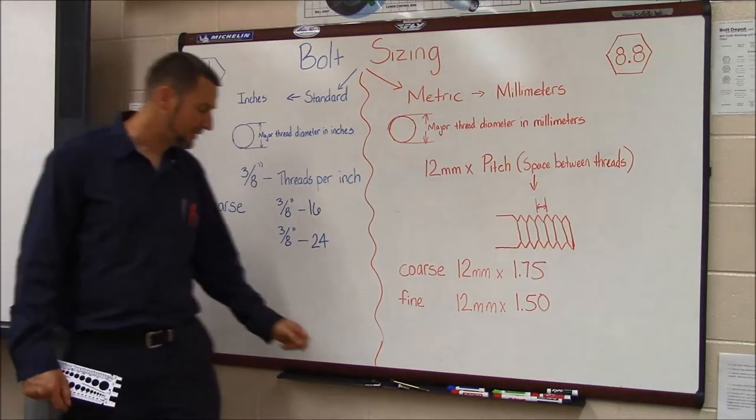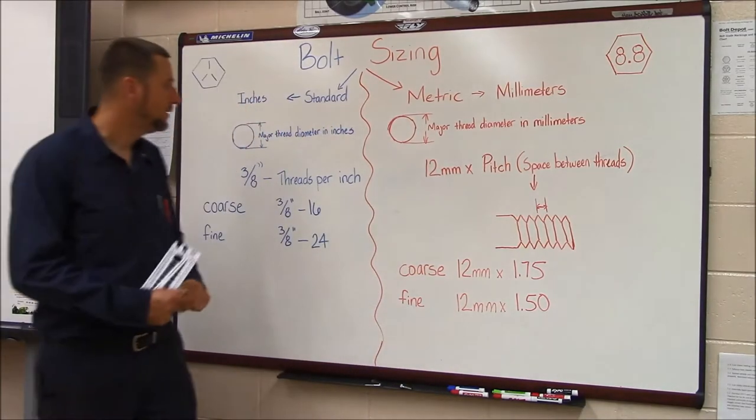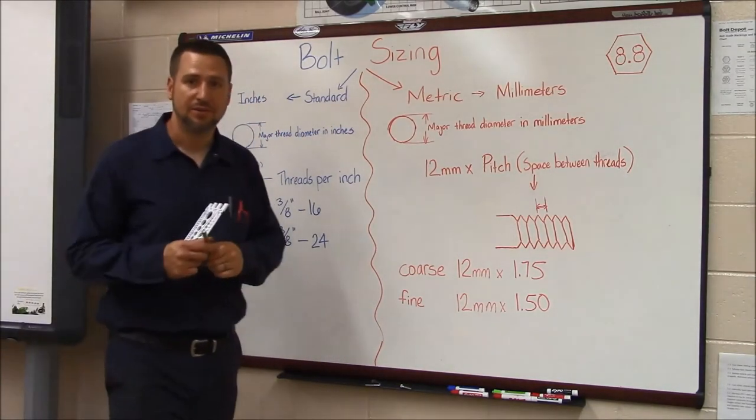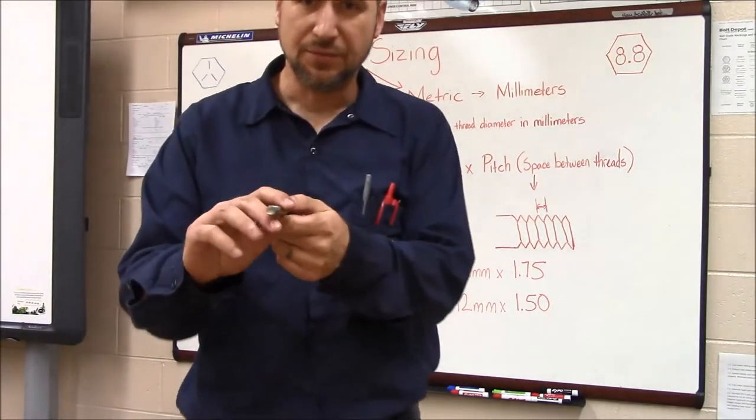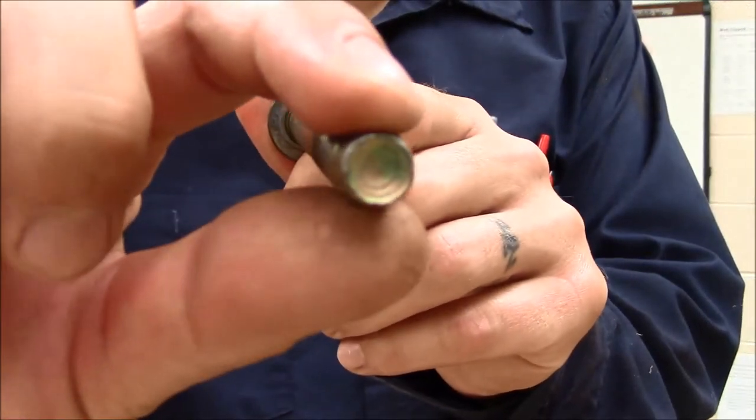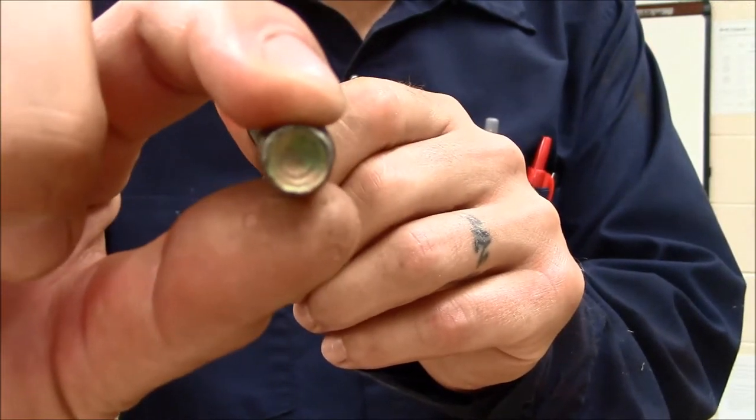What's major thread diameter? It's the diameter on the outside of the threads. So if we measured a bolt from here to here, that's major thread diameter.